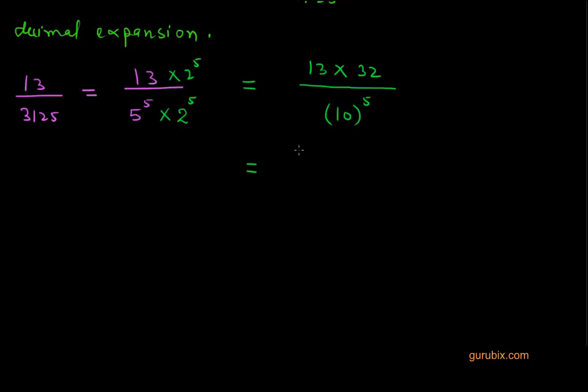And we can write it as 10 to the power 5. If we multiply 13 by 32 we get 416. And if we expand 10 to the power 5 we get 1 with 5 zeros. If we transform this number into decimal expansion we shall have 3 zeros before 416.